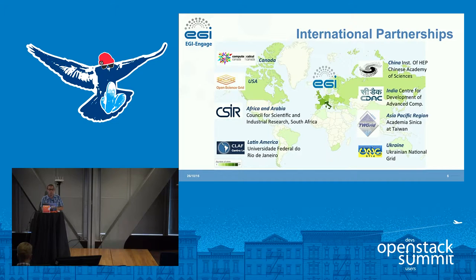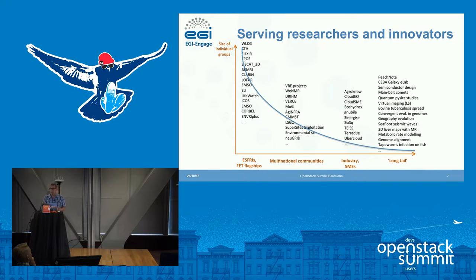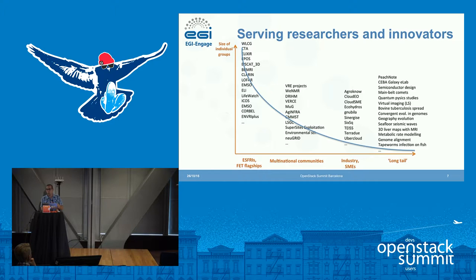We sign memoranda of understanding with these partners to deliver our services in a coordinated way. Our users come from a wide variety of areas and sizes — from very large scientific collaborations like the Large Hadron Collider at CERN, to communities covering several countries, to industry and SMEs, to what we call the long tail: individual researchers or small groups who also have computing needs. We try to serve them all equally.